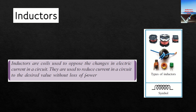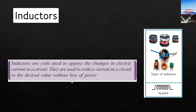The role of an inductor is to reduce the current in a circuit to the required amount without any loss of power, because during energy transmission the power should not be lost — we always expect 100% efficiency. In contrast, resistors cause power dissipation, meaning there will be some energy loss.